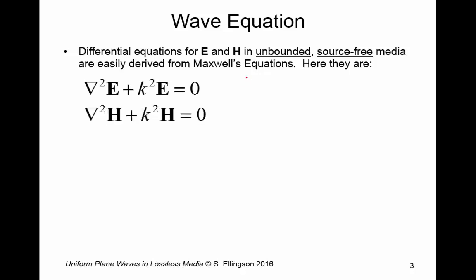So let me just remind you here the electric field E is in units of volts per meter. The magnetic field H is in units of amps per meter and k is the wave number and that has units of radians per meter.